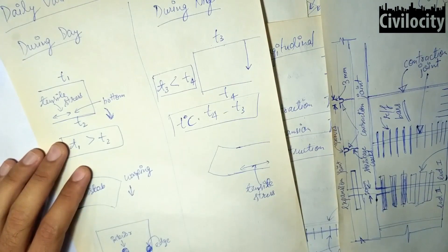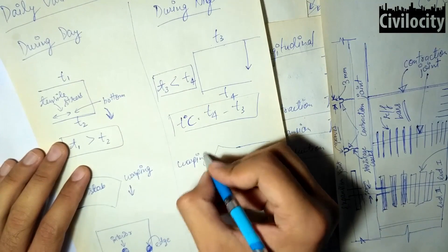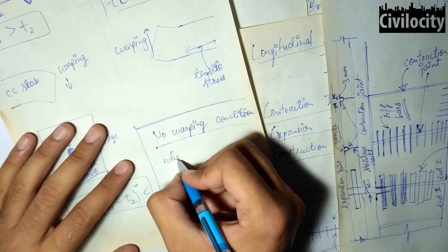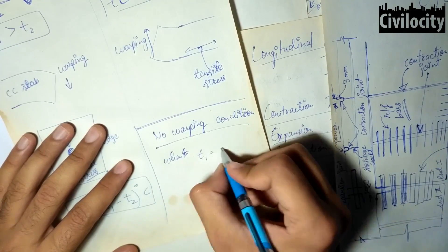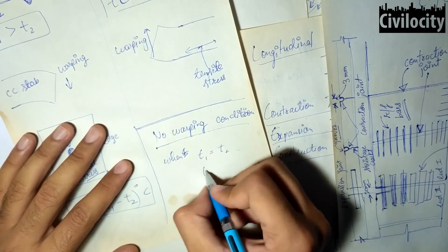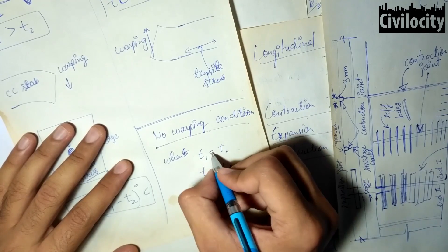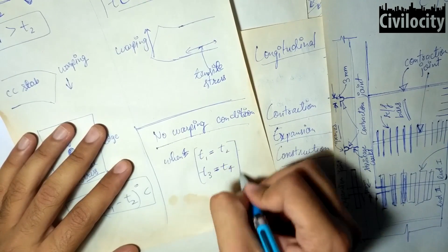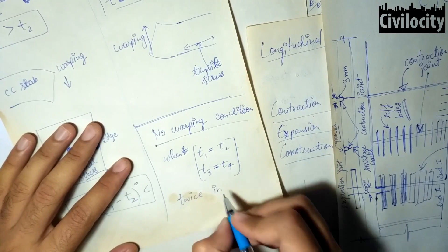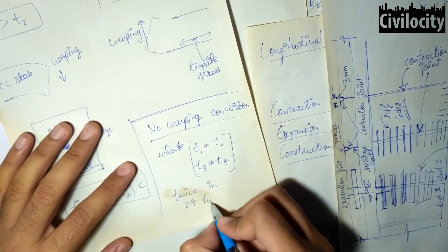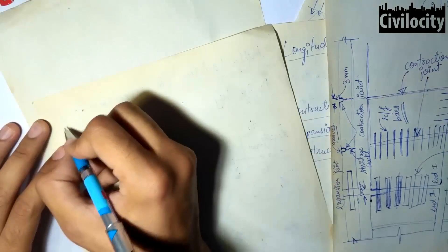There is a no warping condition that occurs when the temperature of the top and the bottom surface of the CC pavements are equal. This happens twice in a 24 hour cycle. Therefore, there will be no warping stress at this stage and this condition is called the no warping condition.